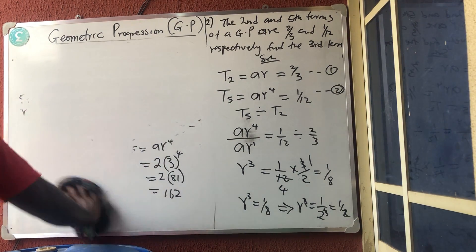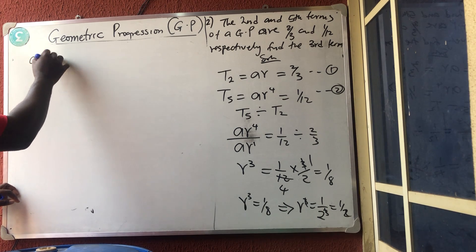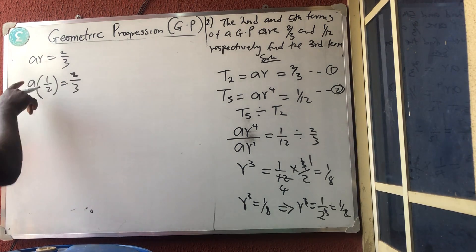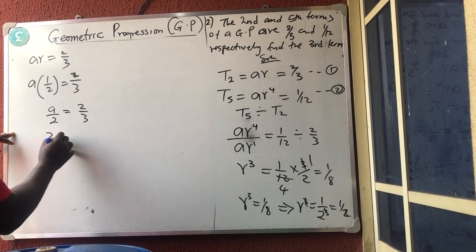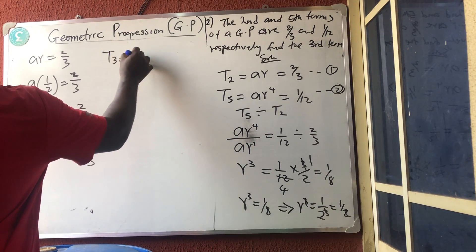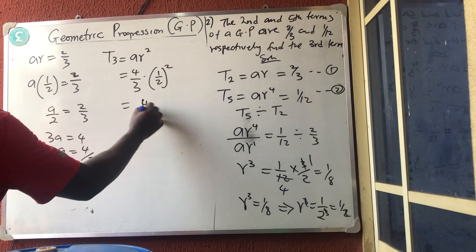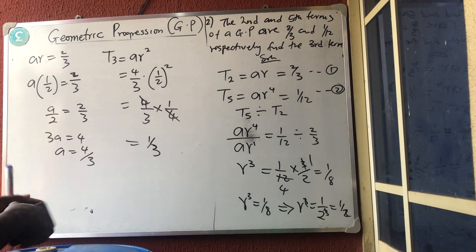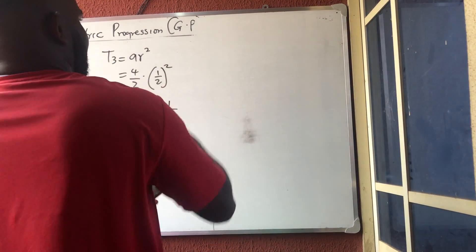With A = 4/3 and R = 1/2, we find the third term: T3 = A × R^2 = (4/3) × (1/2)^2 = (4/3) × (1/4). The 4's cancel, giving 1/3. So the third term is 1/3. If I'm going too fast, please rewind and replay — you will get it.